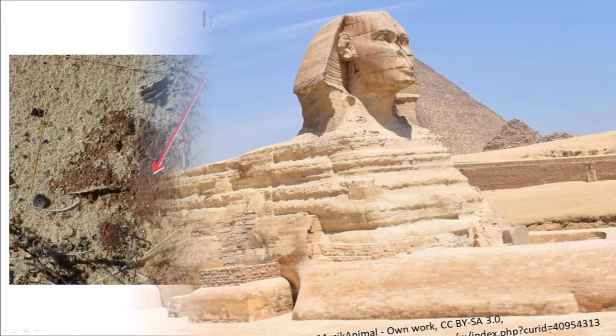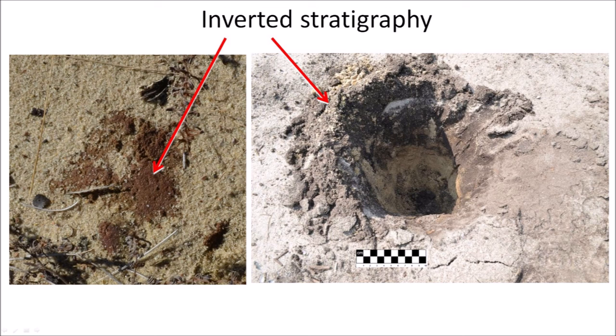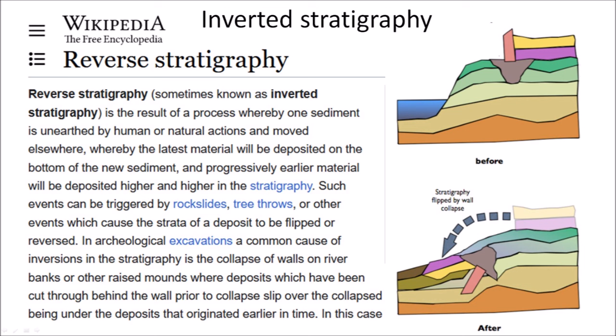Inverted stratigraphy is the result of moving sediment deposited at a deeper level to a higher level. We see inverted stratigraphy in anthills or when we dig holes in the ground. Inverted stratigraphy, also called reverse stratigraphy, can be created by geological processes when the latest material falls and flips over on top of new sediment and is progressively buried by newer material. Such events can be triggered by rock slides or other events that cause the strata of a deposit to be flipped or reversed.